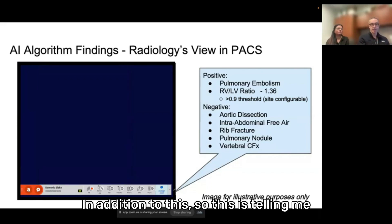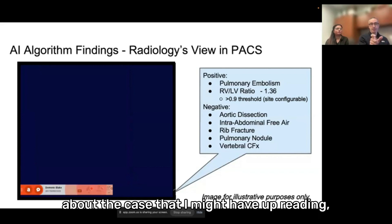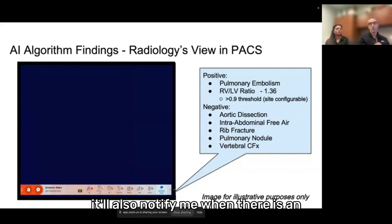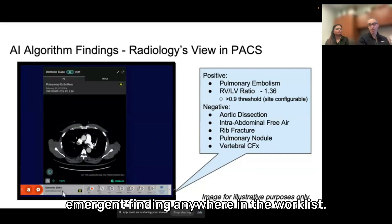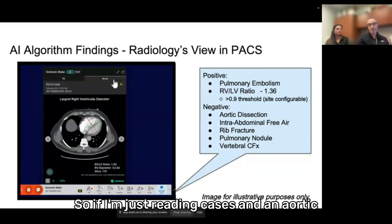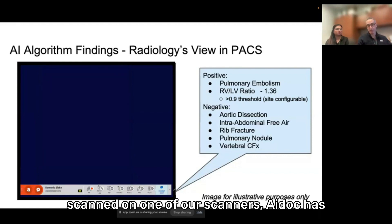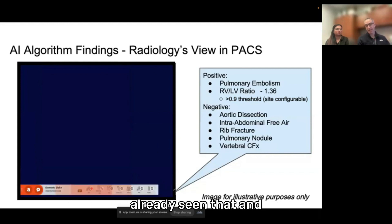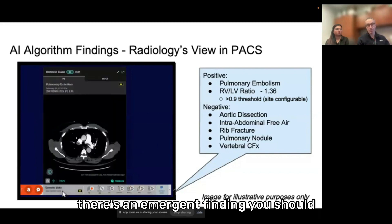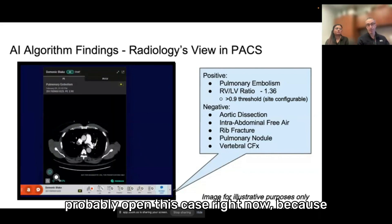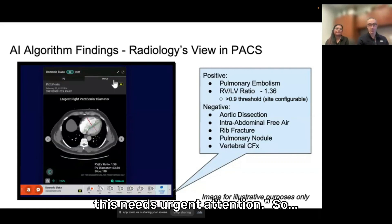In addition to this — so this is telling me about the case that I might have up reading — it'll also notify me when there is an emergent finding anywhere in the worklist. So if I'm just reading cases and an aortic dissection happens to find its way, gets scanned on one of our scanners, ADOC has already seen that. And it'll notify all the radiologists: hey, there's an emergent finding — you should probably open this case right now because this needs urgent attention.